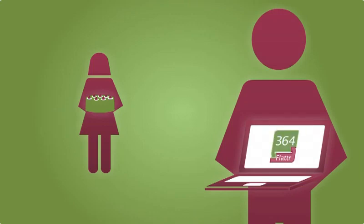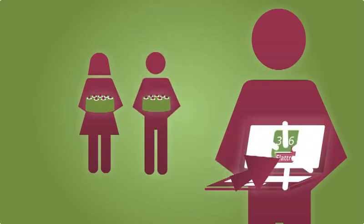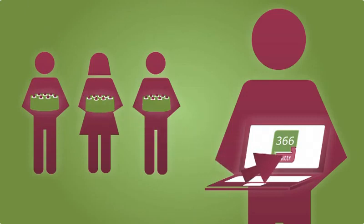Or if you find something you like and there's a Flattr button beside the content, you click it. Each button is a counter showing how many people are willing to give cake for the content.